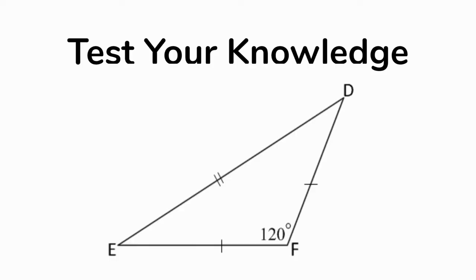How about this one? This triangle is an isosceles obtuse triangle. Two of the sides have one dash each, so they're congruent. And it has a 120-degree angle, which is an obtuse angle. So: isosceles obtuse.